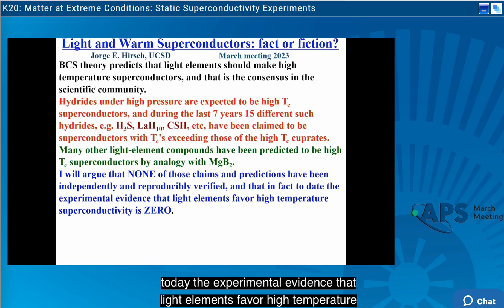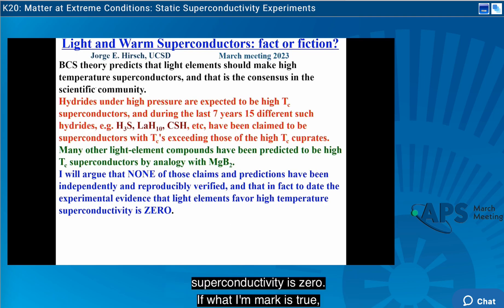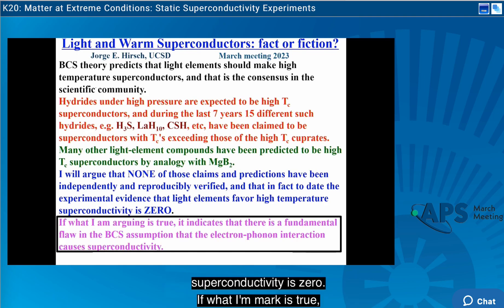I will argue here that none of these claims and predictions have been independently and reproducibly verified. In fact, today, the experimental evidence that light elements favor high-temperature superconductivity is zero. If what I argue is true, it indicates that there is a fundamental flaw in the BCS assumption that the electron-phonon interaction causes superconductivity.